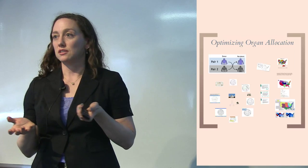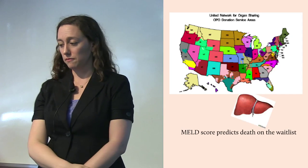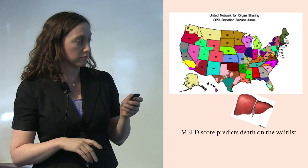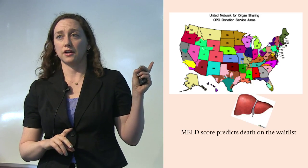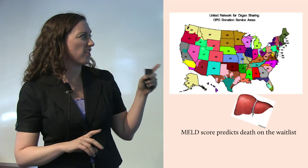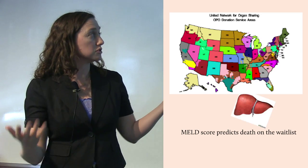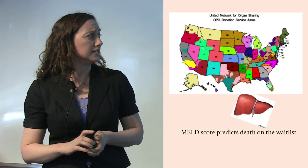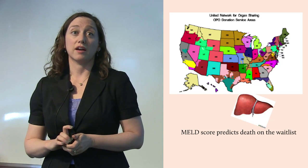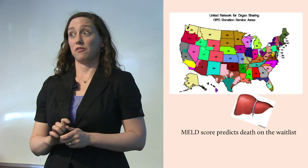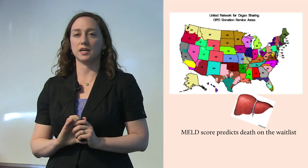So how can I use optimization to inform the way we allocate organs? Here's an example of liver allocation that I've been devoting a lot of attention to recently. The colored groups are called donor service areas, or DSAs — the organization that collects deceased donor organs and delivers them to people who need them. The country is broken up into about 58 of these DSAs, and right now the liver goes to the person in your DSA with the highest MELD score. But that isn't very fair.